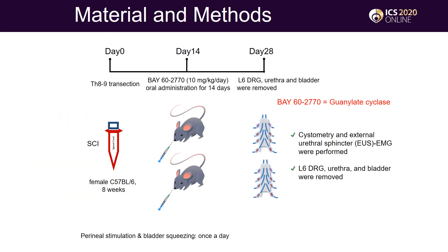The mice in the SCI groups underwent TH8/9 spinal cord transection, followed by oral administration of vehicle or BAY60-2770 at 10mg per kg per day by oral gavage once a day in the morning for 2 to 4 weeks after spinal cord transection. Four weeks after SCI, cystometry and EUS-EMG were performed, and L6-DRG, bladder, and urethra were removed.